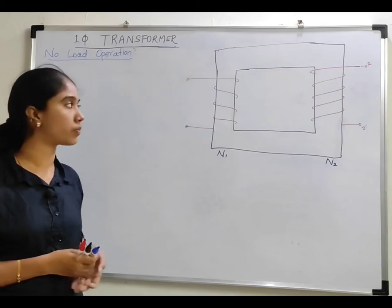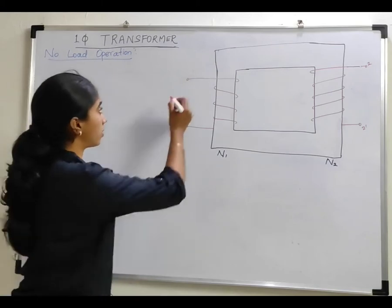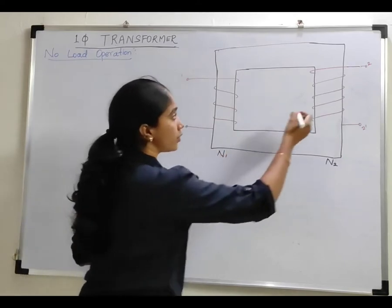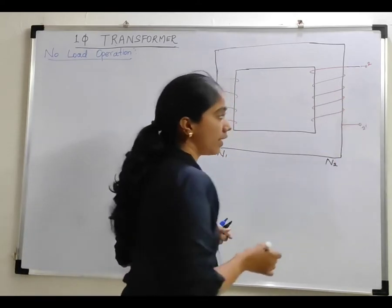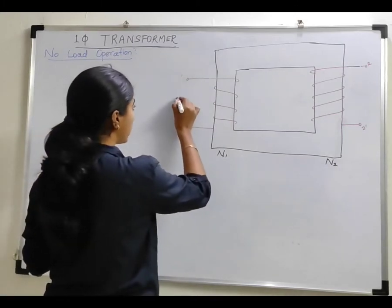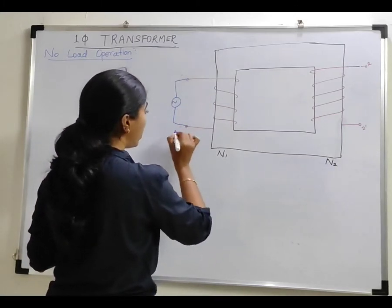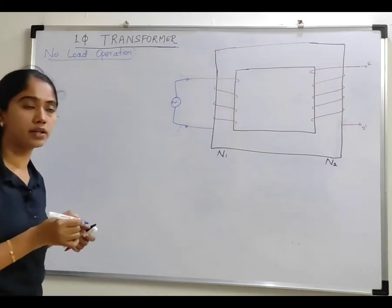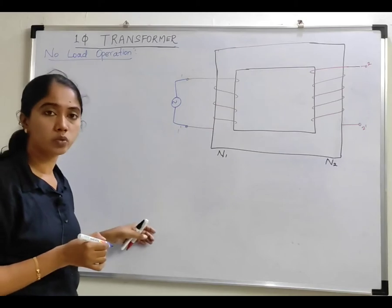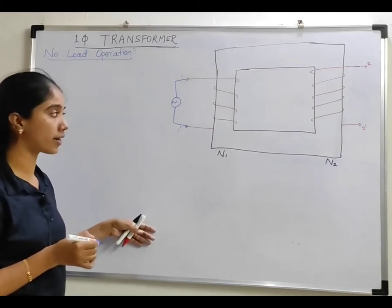Let us consider a winding transformer where I have taken side 1, 1-dash as the input side, and 2, 2-dash as the secondary side. I have connected a single-phase AC supply to this primary side and I have not connected any load to the secondary side. Let us see how this transformer is going to behave and what is the phasor diagram during no-load condition.